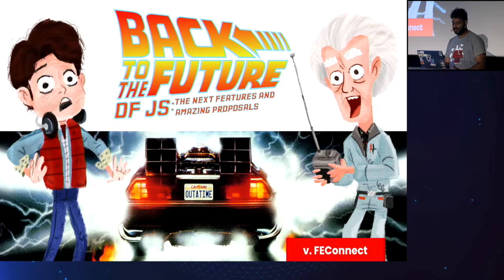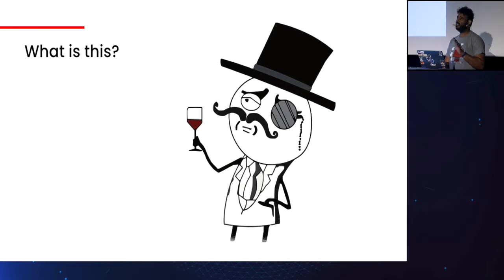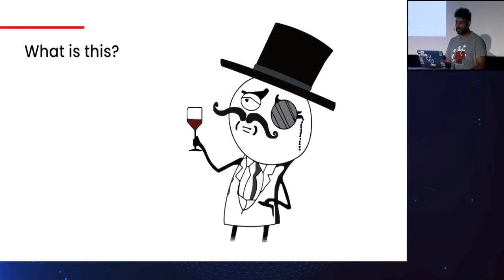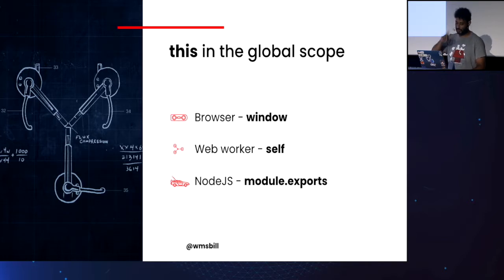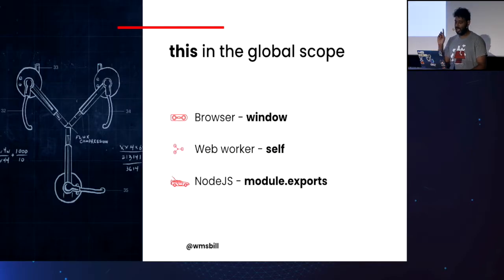I'd like to start the presentation by asking a simple but tricky question: what is `this`? In ECMAScript, `this` has different semantics than in many other languages, because in those languages `this` often refers to the lexical scope. In the global scope, `this` refers to the global object — like `window` in a browser, `self` in a web worker, and `module.exports` in Node.js.